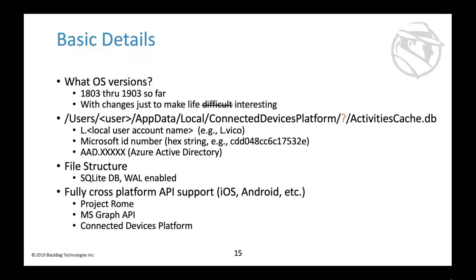There are also application-specific tiles — for example, the Microsoft Store app showing someone looking at downloading Python 3.7. There's also a search bar to find activities related to something you're specifically interested in, and searching can reveal items that don't appear by default — a hint that more information is stored in the OS than is actively visible in the interface.